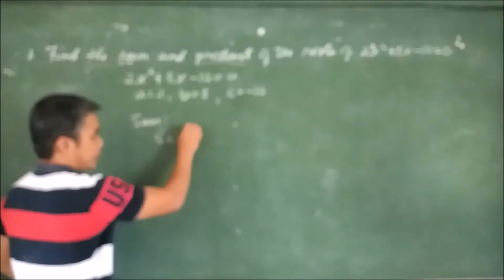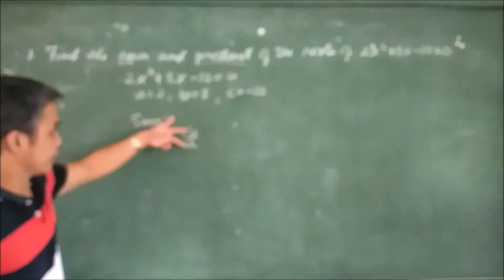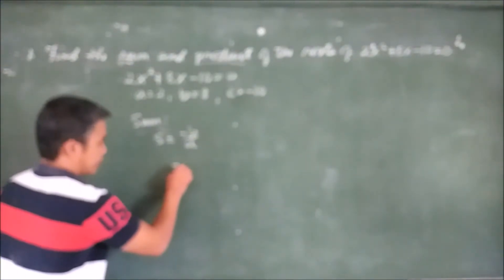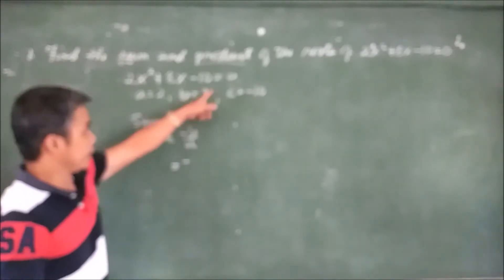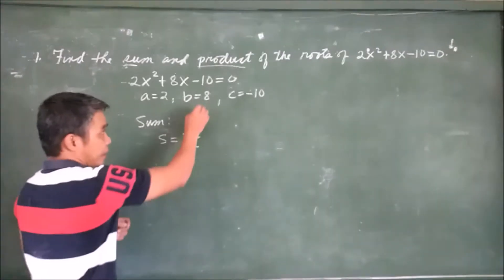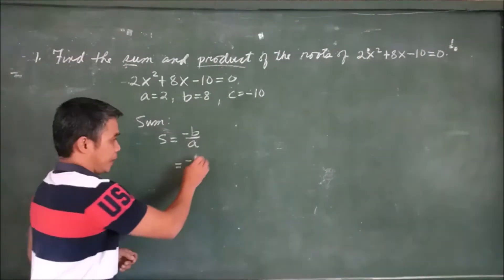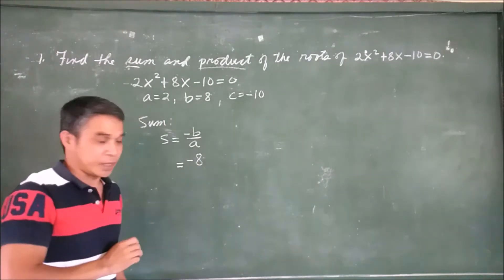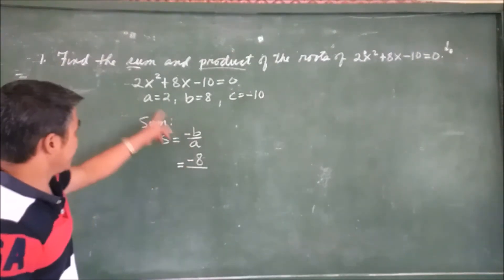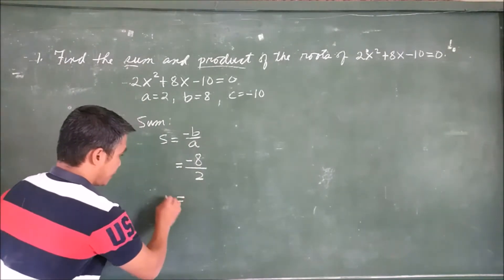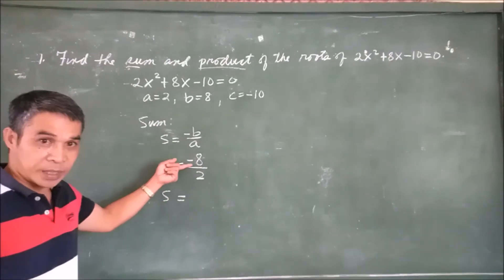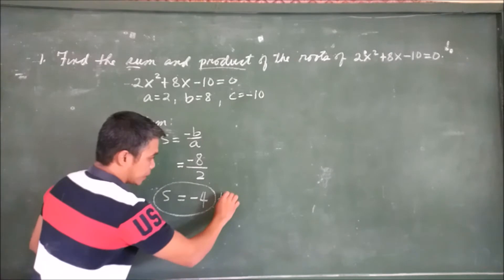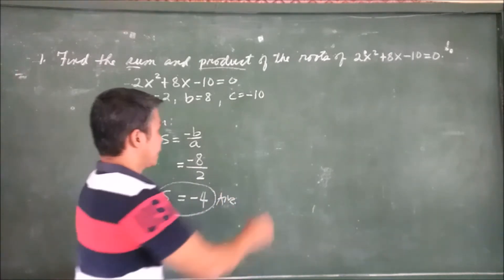Now let's apply the formula for finding the sum. Sum equals negative b over a. Substituting our values: b is positive 8, so negative b is negative 8, and a is 2. Therefore, sum equals negative 8 divided by 2, which equals negative 4. That is our sum.